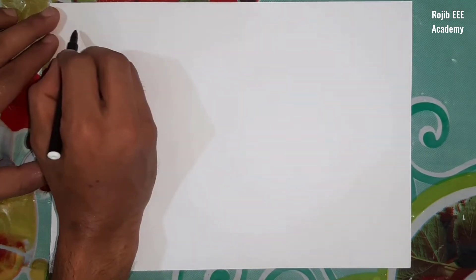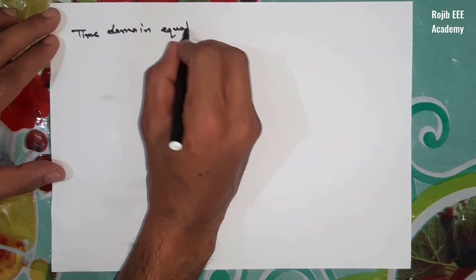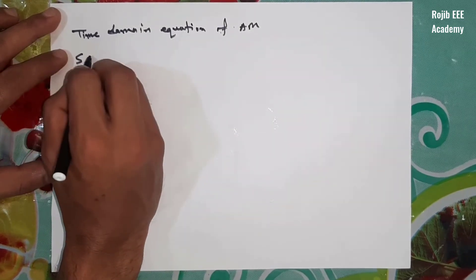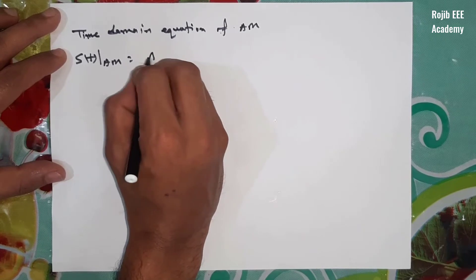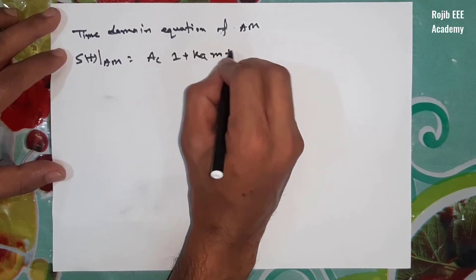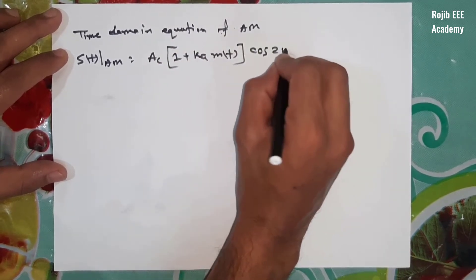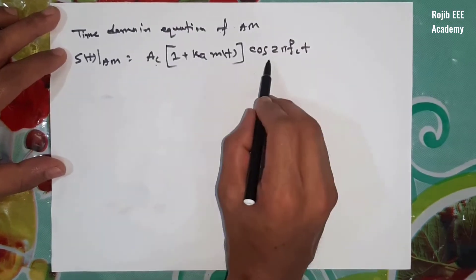So, we will start with the time-domain communication of the AM signal. The time-domain AM signal is: [1 + ka·m(t)] cos(2π·fc·t).